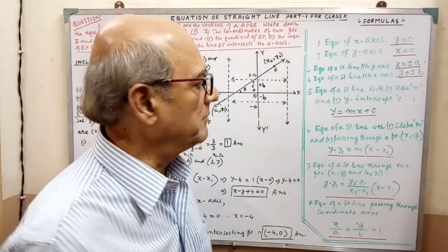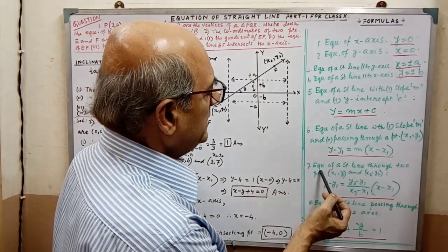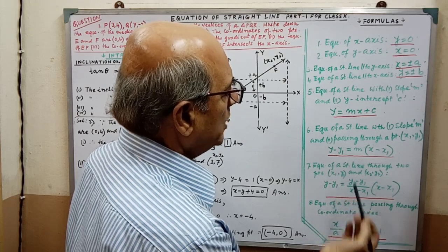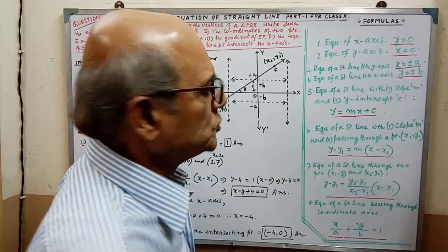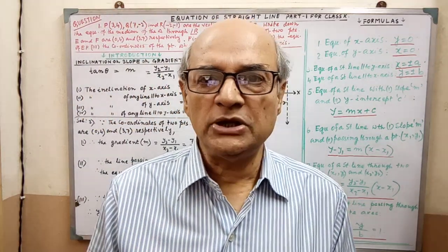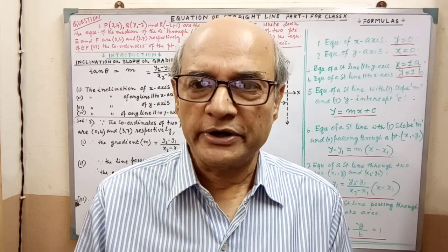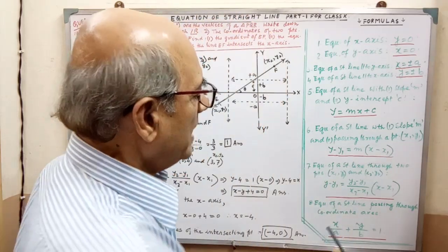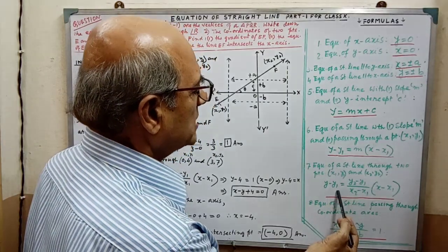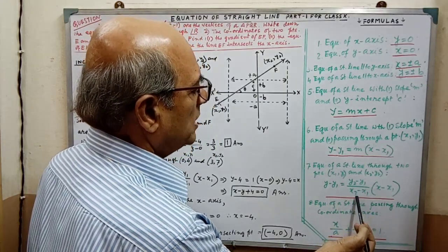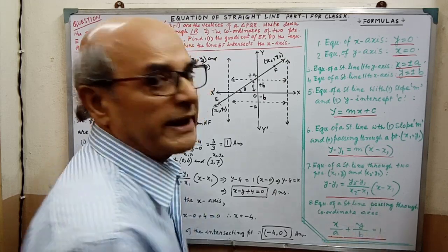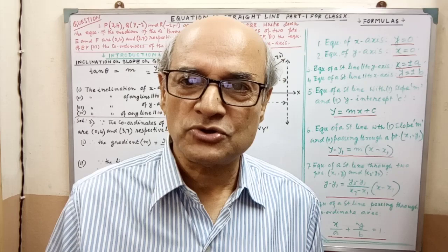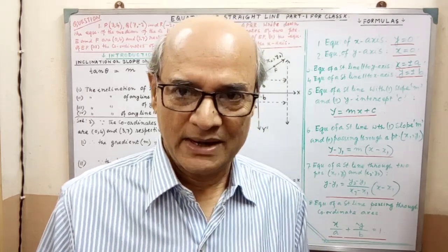Condition and frame of the equation, both you have to remember. Next, equation of a straight line through two points x1, y1 and x2, y2 — when the line passes through two coordinates and both are given. The equation will be y minus y1 equal to (y2 minus y1) divided by (x2 minus x1), into (x minus x1).